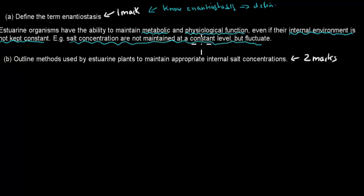The difference between enantiostasis and homeostasis is, in homeostasis we always keep our internal environment constant to make sure our body works properly, whereas in enantiostasis, the internal environment is not kept constant, but metabolic and physiological function are still maintained. Remember, metabolic just means how well our enzymes work, and physiological means body. So that simple definition gives you one mark for this question.